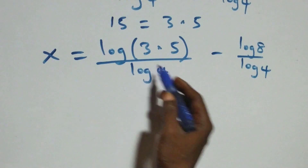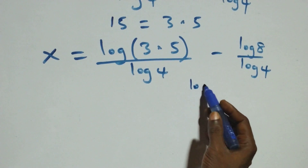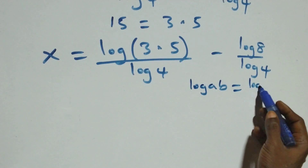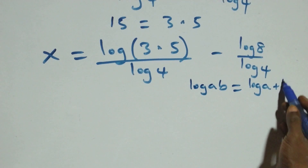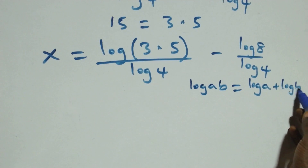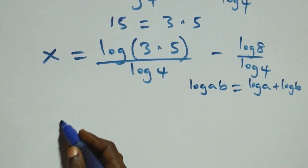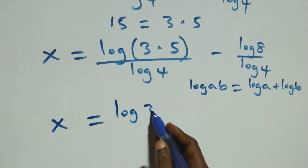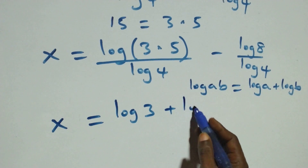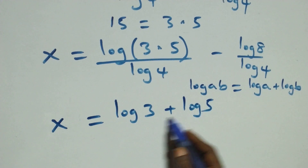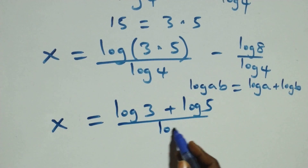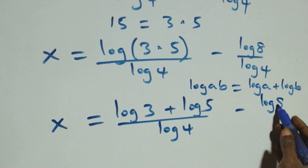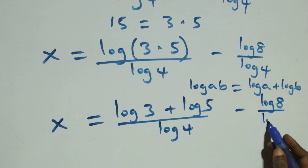This follows from the log rule: when we have log of a times b, this can be written as log a plus log b. So we have x equals log 3 plus log 5, over log 4, minus log 8 over log 4.